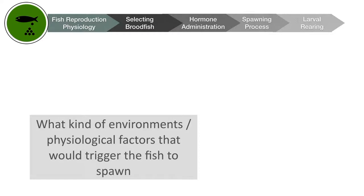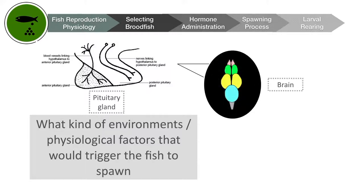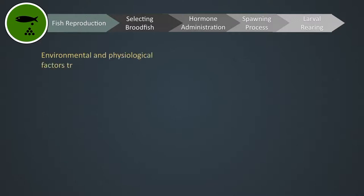So what kind of environmental or physiological factors would trigger the fish to spawn? The reproduction mechanism in fish is triggered naturally by environmental factors. The cues from the environment will trigger hormonal change within the animal, stimulated by the pituitary gland. The pituitary gland is situated on the ventral side of the brain, below the hypothalamus. It produces, accumulates, and stores gonadotropic hormones, which play an important role in ovulation. Several environmental factors involved in gamete maturation and spawning include photoperiod and water temperature.